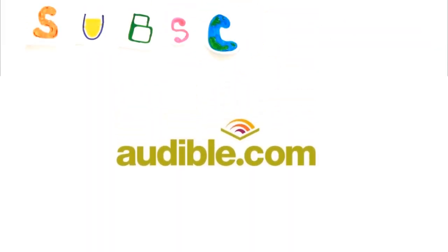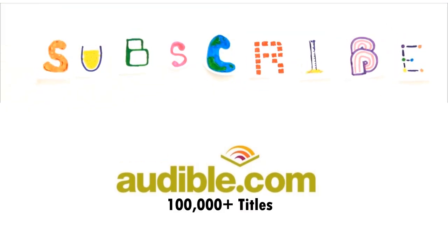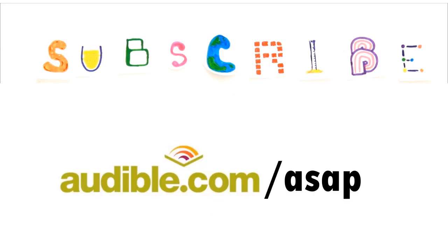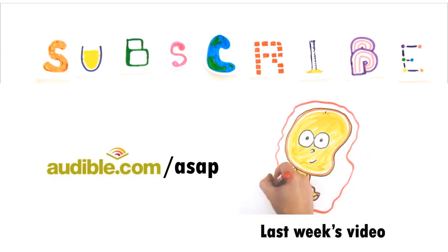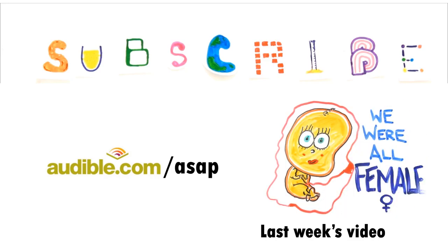This episode of ASAP Science is supported by Audible.com, the leading provider of audiobooks with over 100,000 downloadable titles across all types of literature. This episode was inspired by the book The Brain That Changes Itself by Norman Doidge. You can download this audiobook or another of your choice for free at audible.com/ASAP. Special thanks to Audible for making these videos possible and offering you a free audiobook at audible.com/ASAP. And subscribe for more weekly science videos.